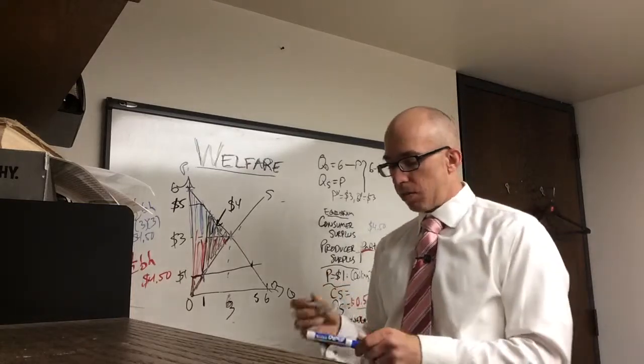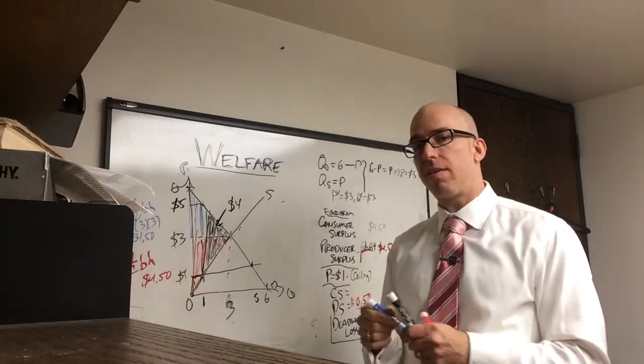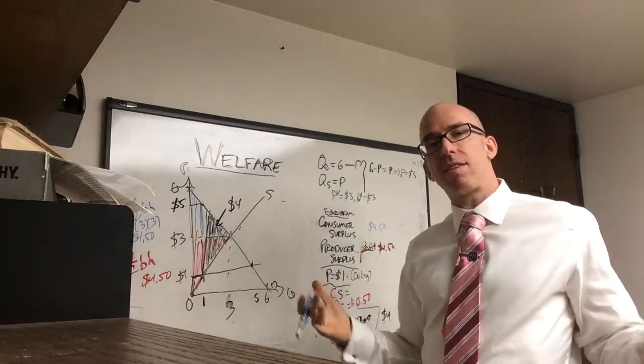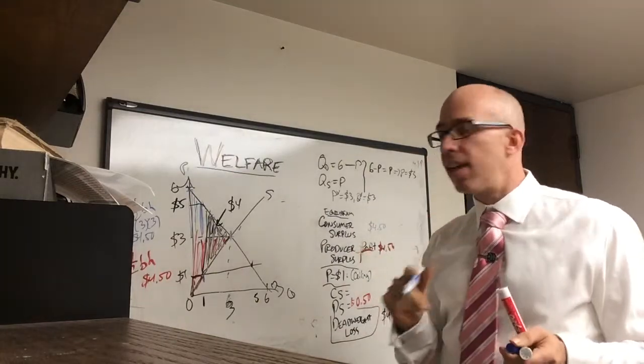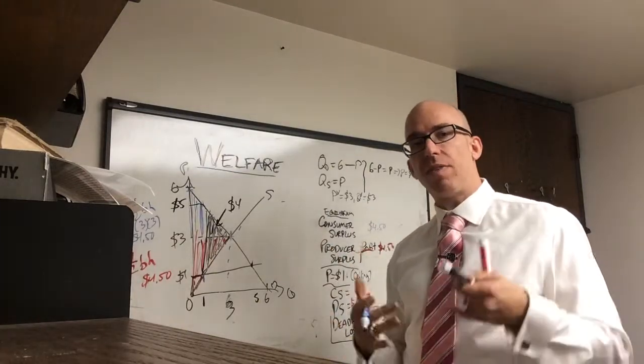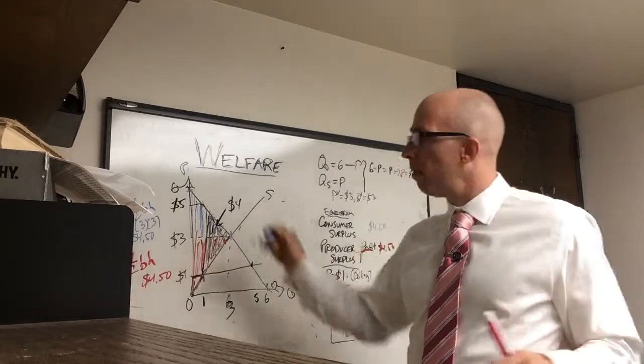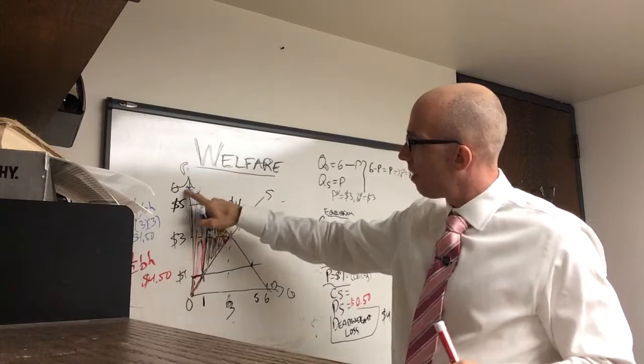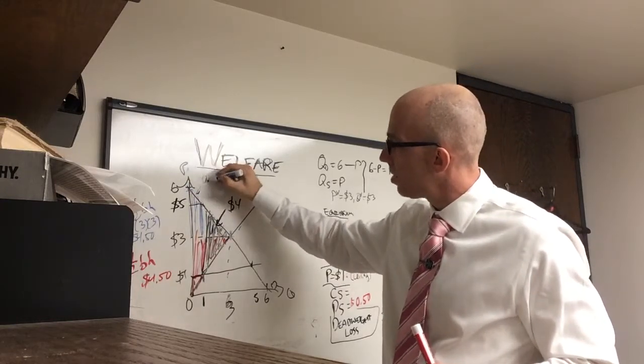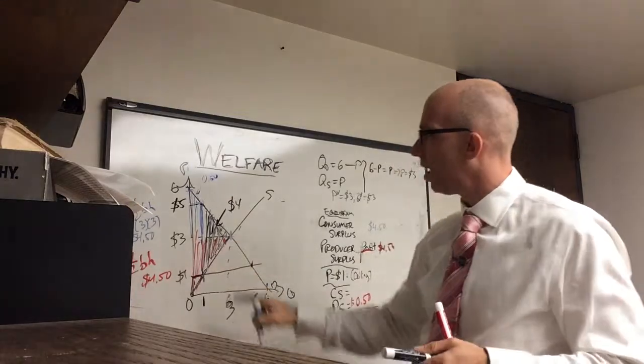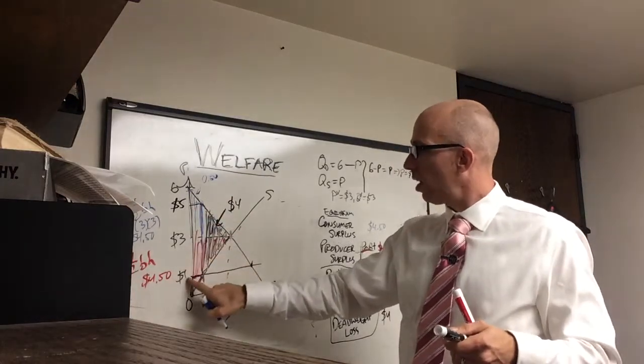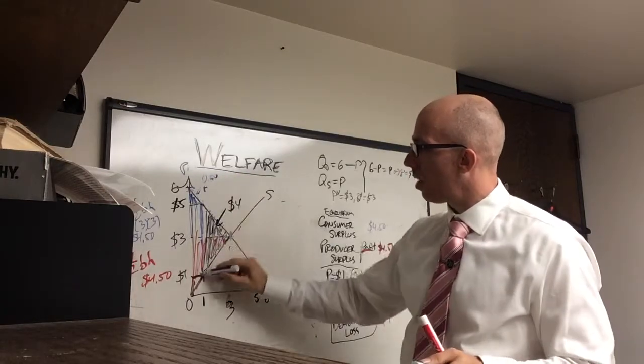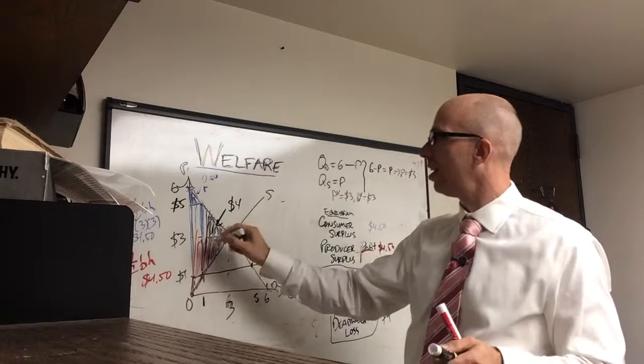Now consumers might be happy because of this low price, and we can actually put a dollar value on it. That's the point, is that you can say, common sense tells you consumers like low prices. This can tell you how much. It can actually tell you if they're happier because of the price change overall. So we're going to cut this up into two parts. We've got this little triangle, which is 1 half times 1 times 1, or 50 cents. And then we've got this triangle here. This has a height of 4, and it has a base of 1. So this is a triangle plus a rectangle. So it looks like a pencil.